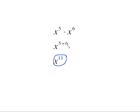In words, this rule says when multiplying exponential expressions with a common base, keep the base and add the exponents. So let's do some problems. x to the fifth times x to the sixth. This is perfect. It's got the same base.